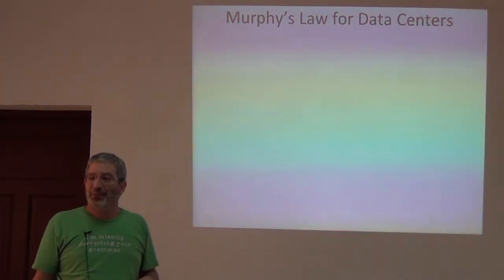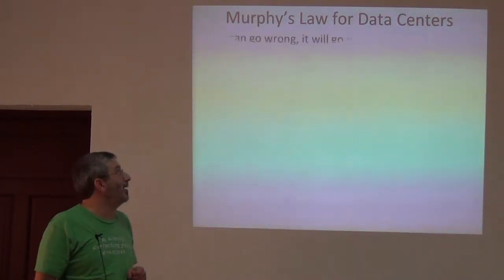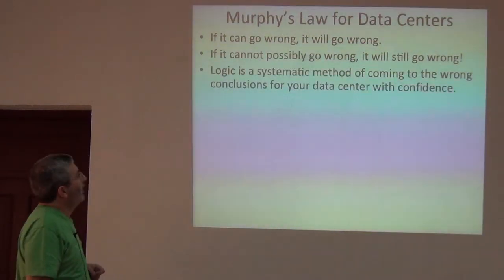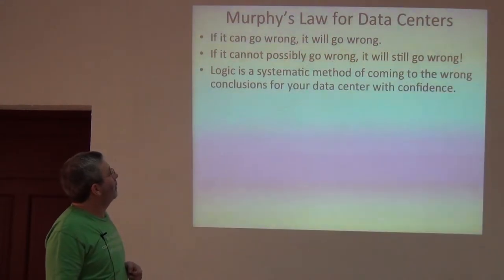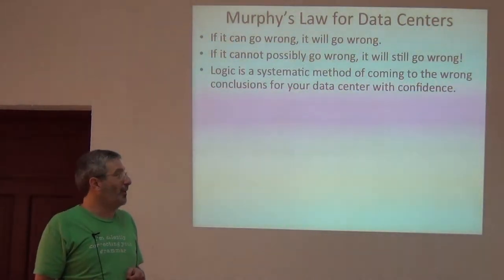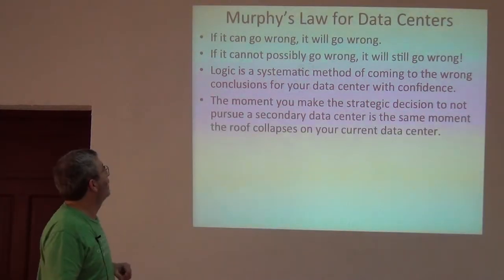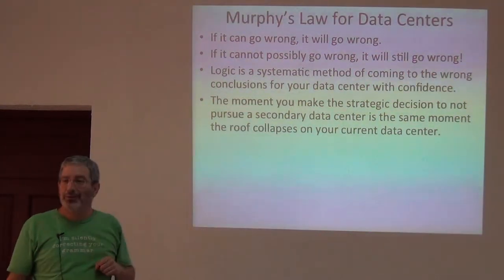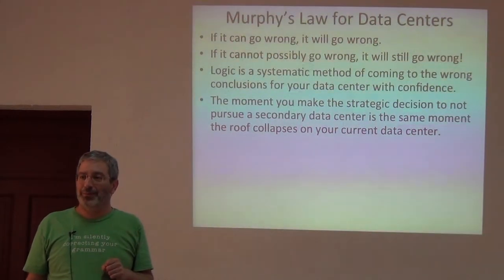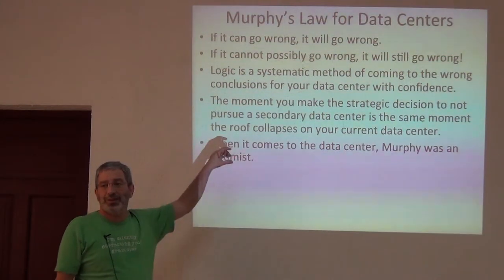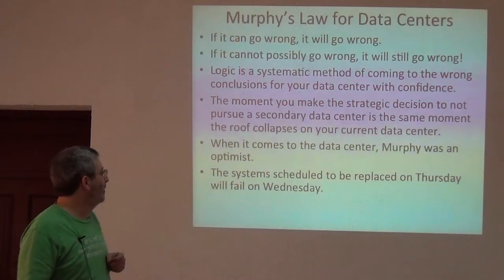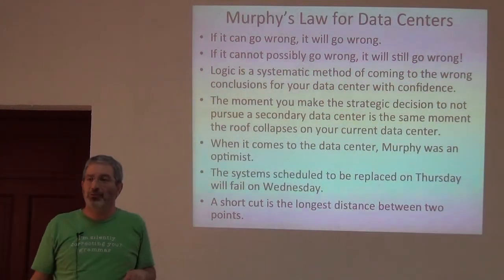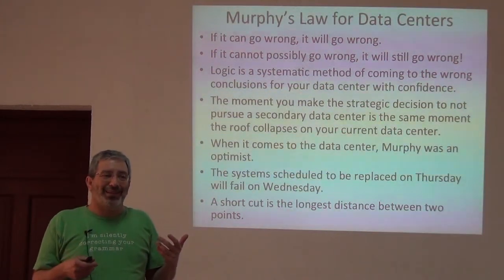Murphy's Law for data centers is pretty relevant to Murphy's Law for biodiversity data: if it can go wrong, it will go wrong. If it cannot possibly go wrong, it will still go wrong. Logic is a systematic method of coming to the wrong conclusions for your data center with high confidence. We've thought about it, this is the best decision — guess what? You're wrong. The moment you take the strategic decision not to replicate data is the same moment your single copy gets destroyed. When it comes to biodiversity data, believe it or not, Murphy was actually optimistic. A shortcut is the longest distance between two points.